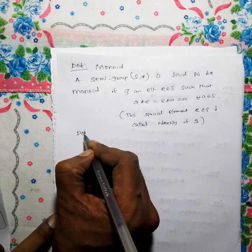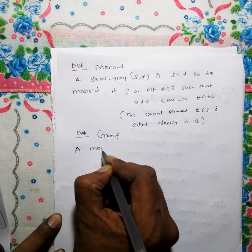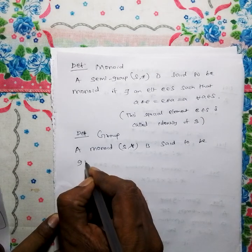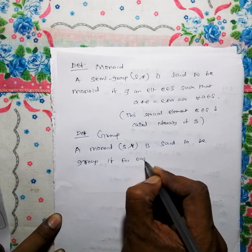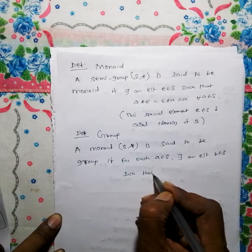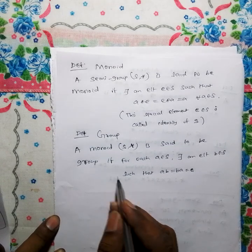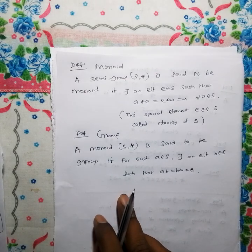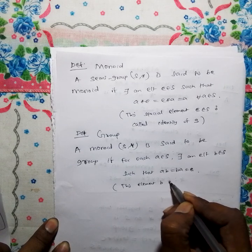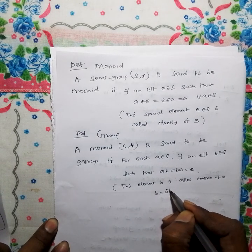So next one is group. A monoid (S, star) is said to be a group if, for each A belonging to S, there is an element B belonging to S such that A star B equals B star A equals E, the identity element. Here, B is called the inverse of A.